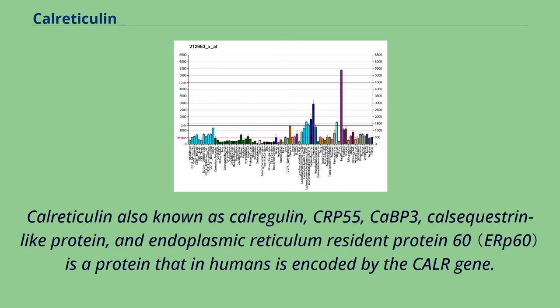Calreticulin, also known as calregulin, CRP55, CAP3, calsequestrin-like protein, and endoplasmic reticulum resident protein 60, is a protein that in humans is encoded by the CALR gene.